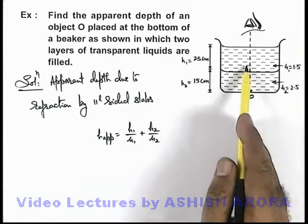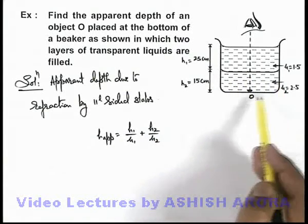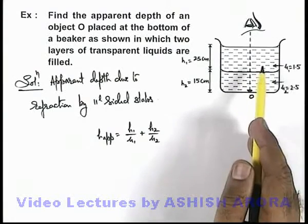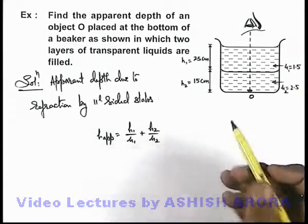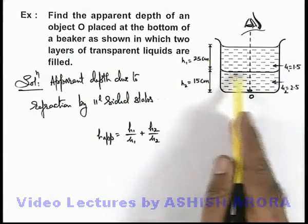As here there are only two transparent liquids which are behaving like different parallel-sided slabs, so it'll be h1/μ1 + h2/μ2. This can be obtained by assuming a negligible air gap between the two.